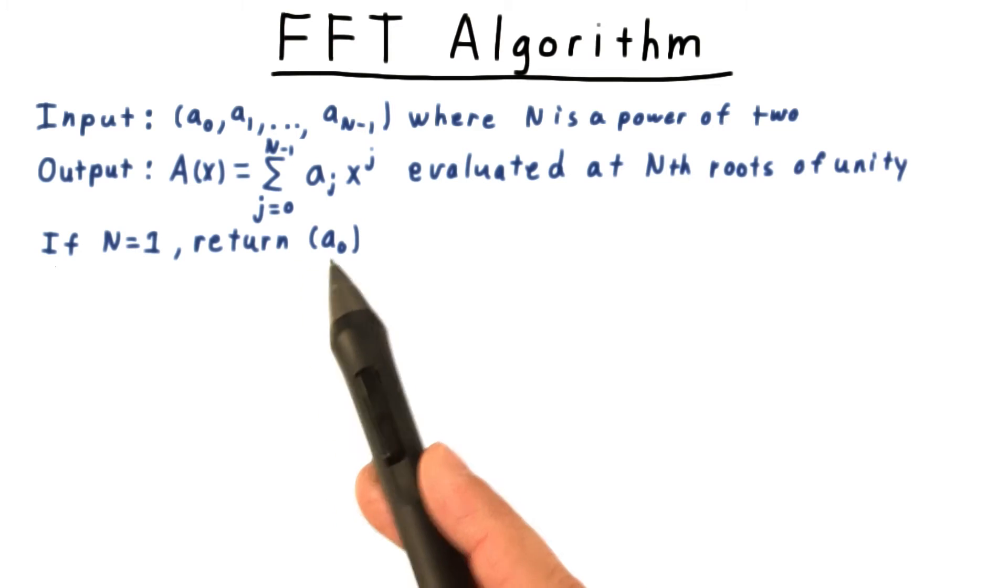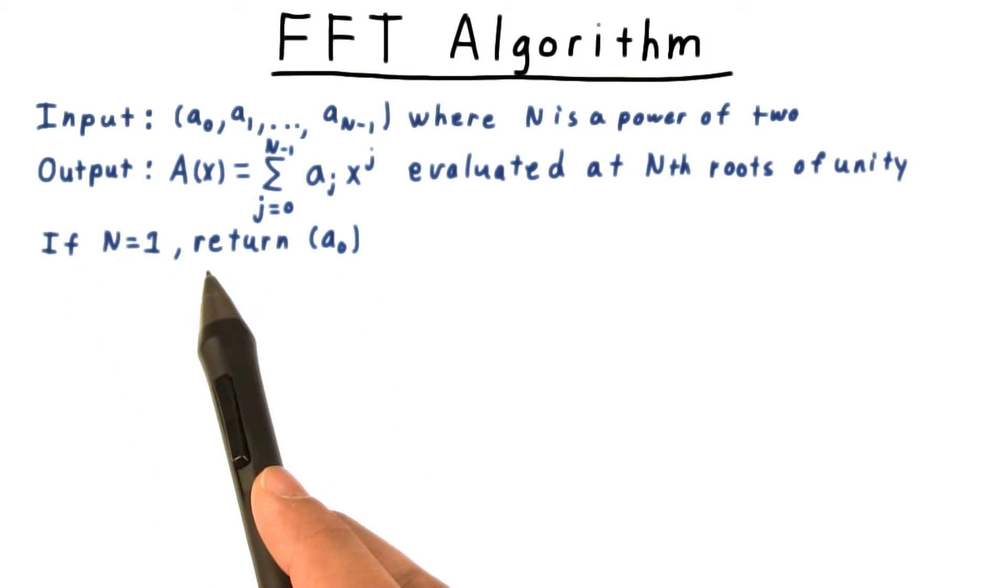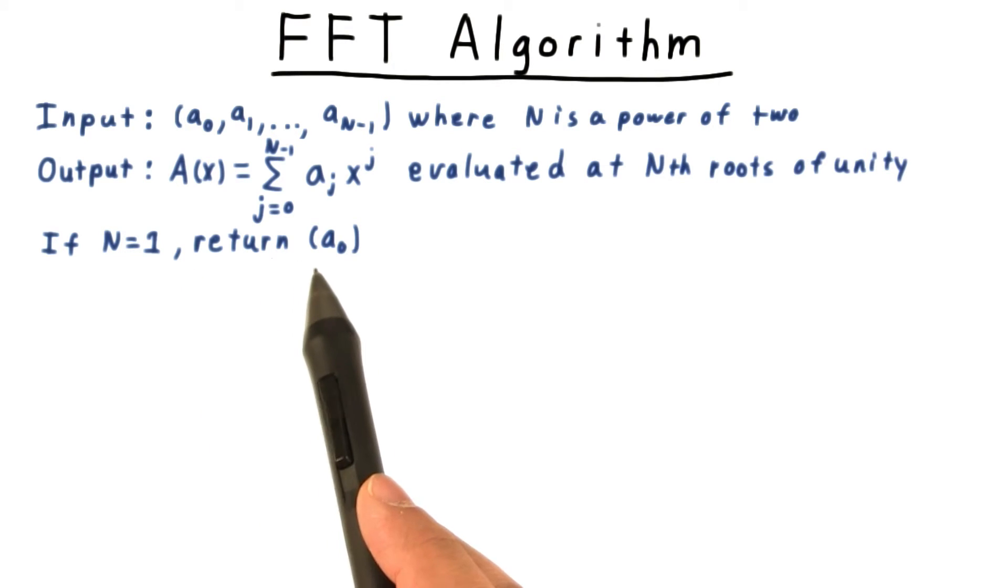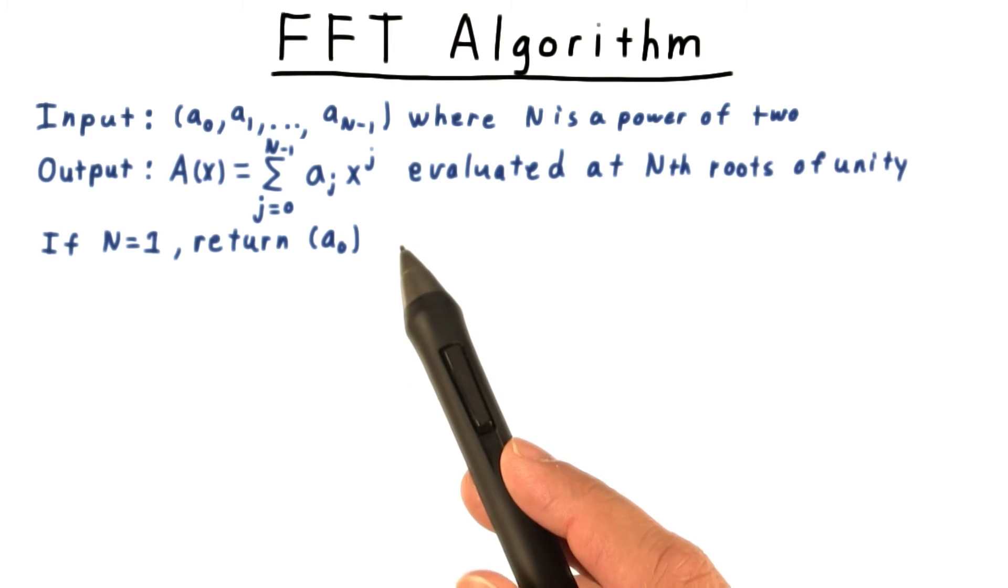We'll state this as a recursive algorithm. And the base case is where n is equal to 1. In that case, we want to return the single element sequence consisting just of a0, the constant term.